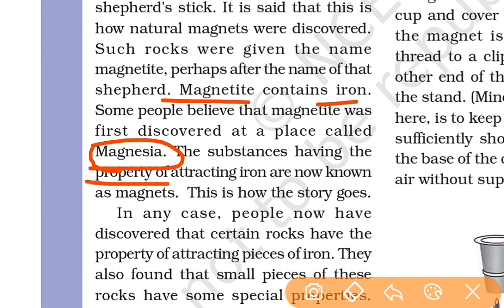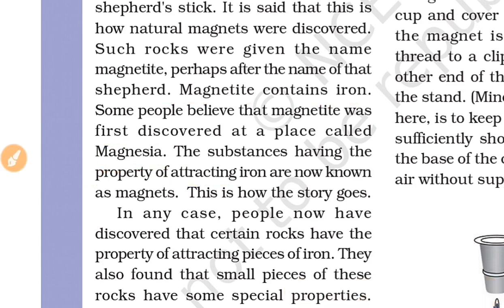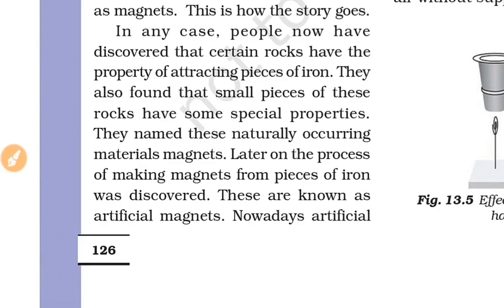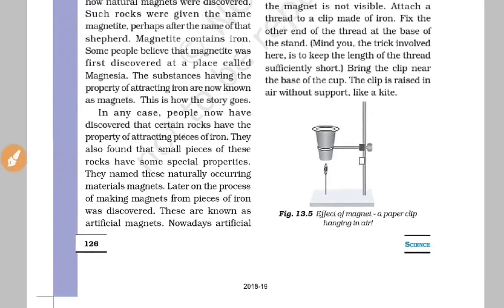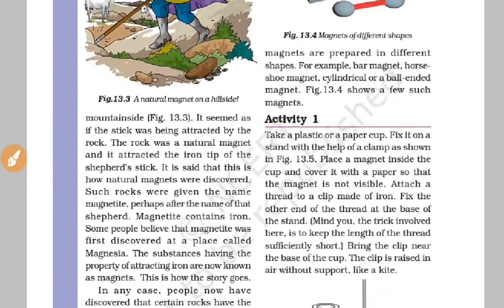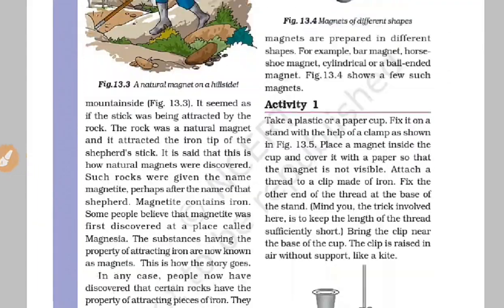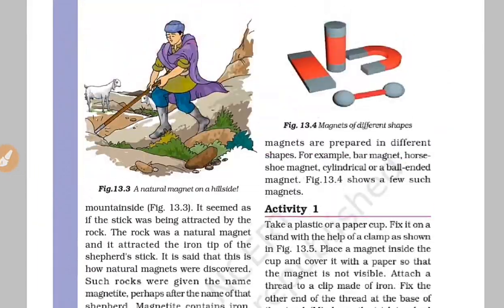The property of attracting iron — iron is attracted to the properties of magnets. Small activity: we know the different shapes of magnets. We use magnets in various instruments.